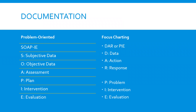After completing the nursing process, we want to make sure we're documenting. There are a couple of different approaches: problem-oriented documentation and focused documentation. In problem-oriented documentation, we use SOAP or SOAPy notes, which include subjective data, objective data, assessments, plans, interventions, and evaluations. Focus charting focuses on a primary issue and is more condensed. It can use the DAR format — documenting data, action, and response — or the PI format, documenting problem, intervention, and evaluation.